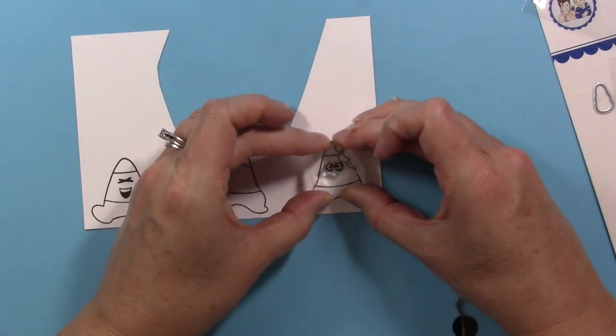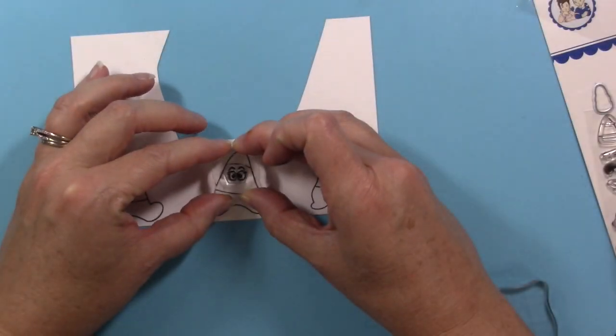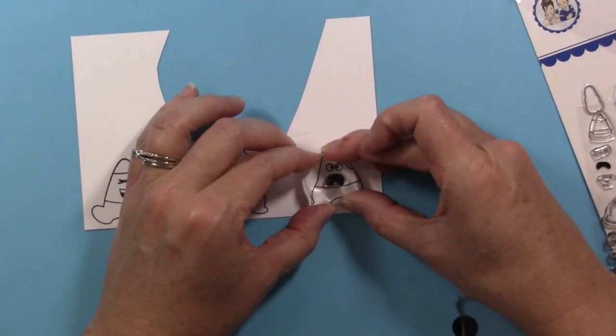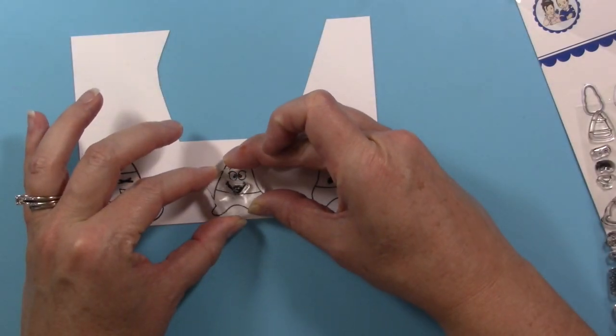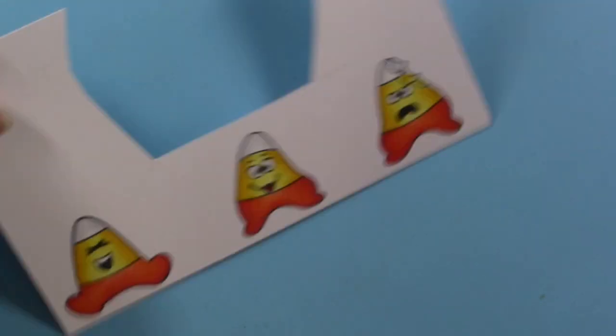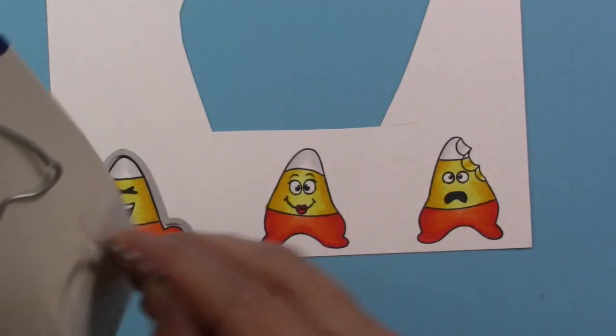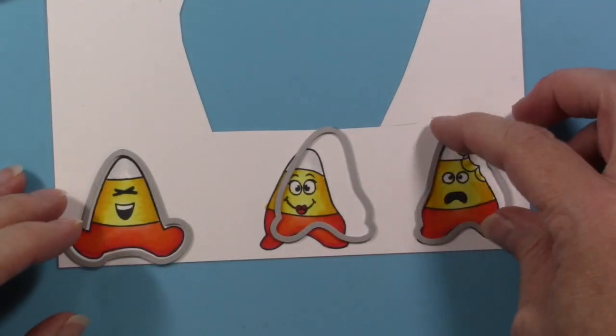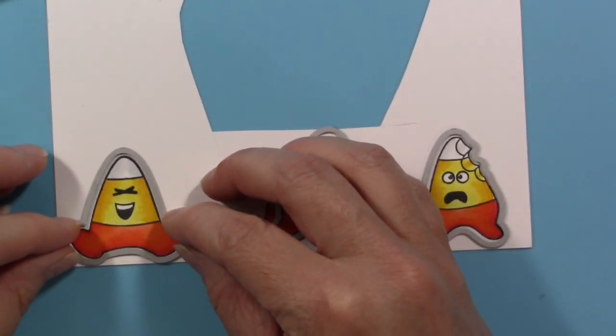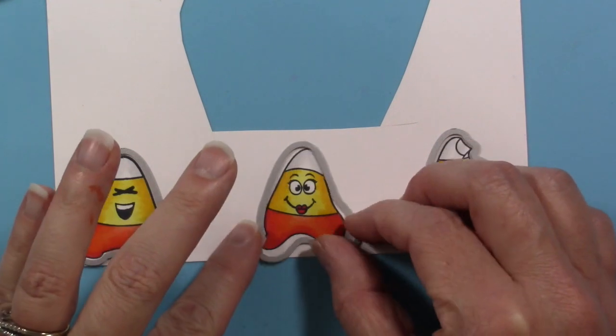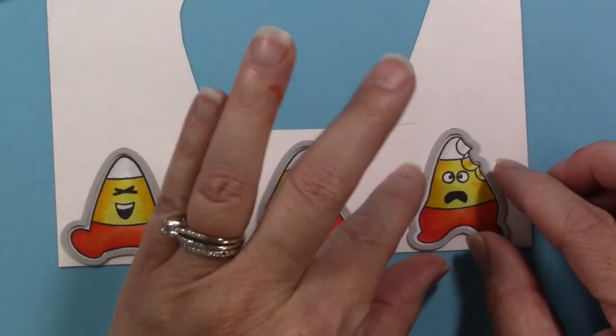It makes it so much easier to stamp with a lot of little stamps you might have in your stash. To line up those little eyes and mouths on there, it's a dream. If you get a chance to buy these little stamping blocks, I would do so. I'll link in the description box to the ones that I got.